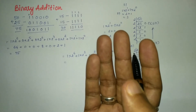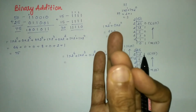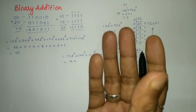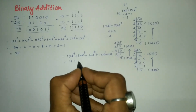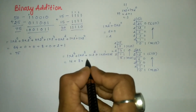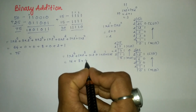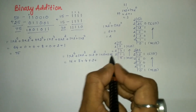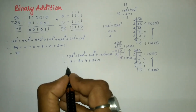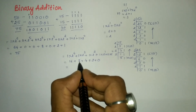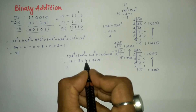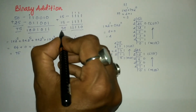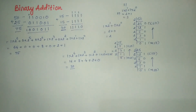Simplifying: 2 to the power 4 is 16, so 1 times 16 is 16; 2 to the power 3 is 8, so 1 times 8 is 8; 2 to the power 2 is 4, so 1 times 4 is 4; 2 to the power 1 is 2, so 1 times 2 is 2; 0 into anything is 0. Therefore 16 plus 8 is 24, plus 4 is 28, plus 2 is 30. The result is absolutely correct: 1 1 1 1 0 in binary equals 30.